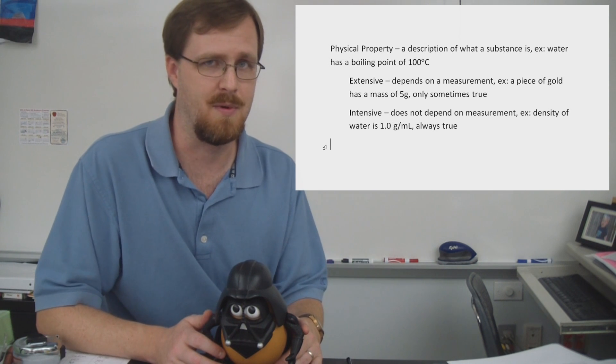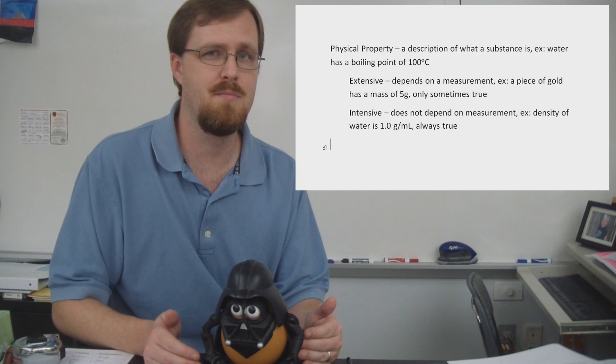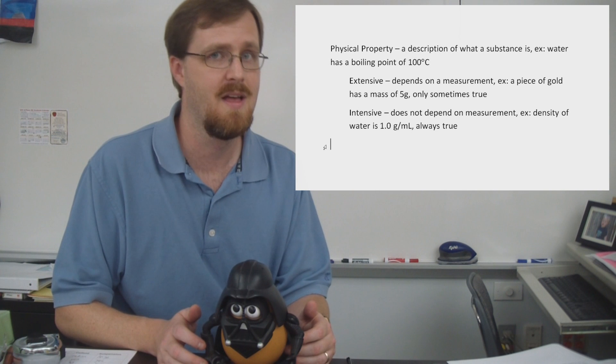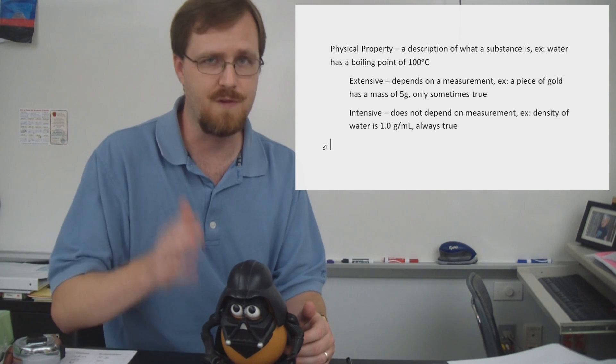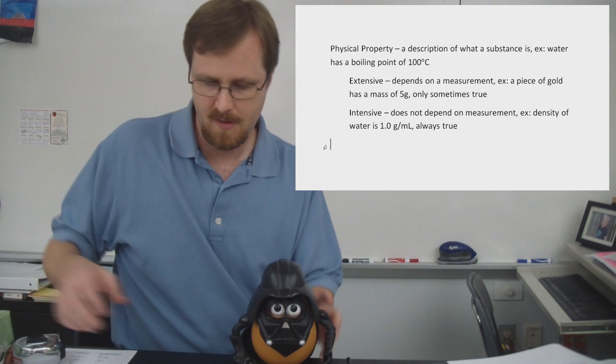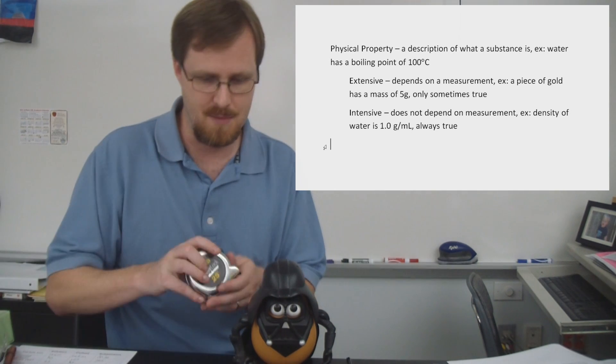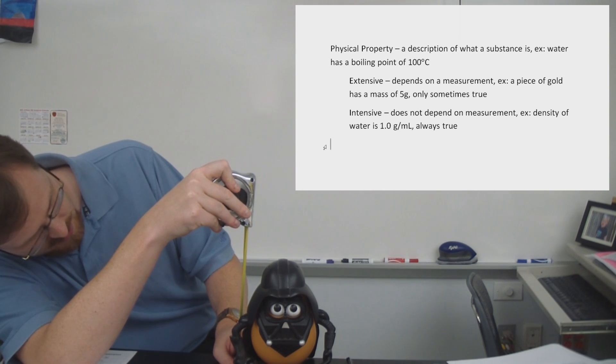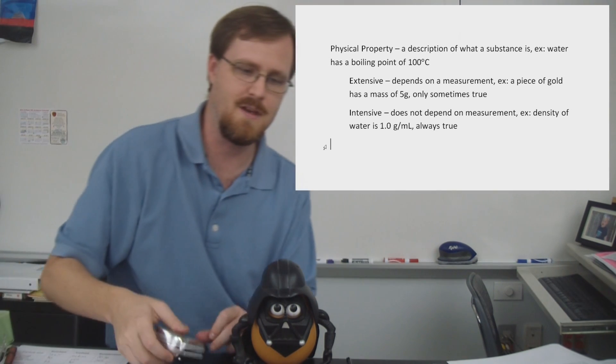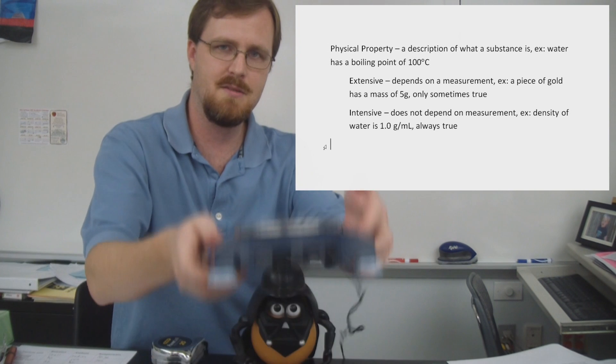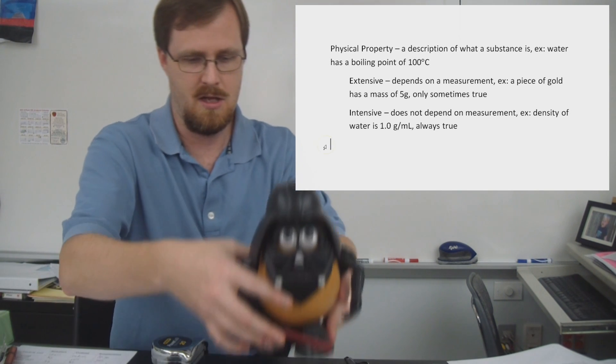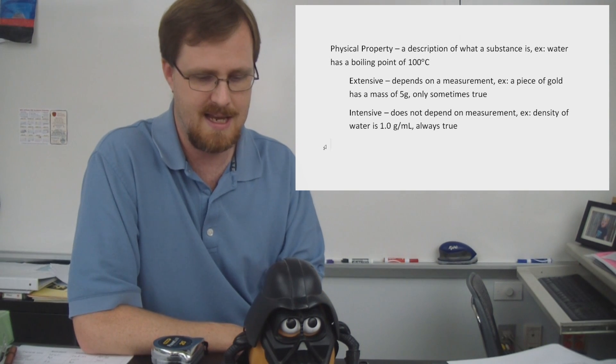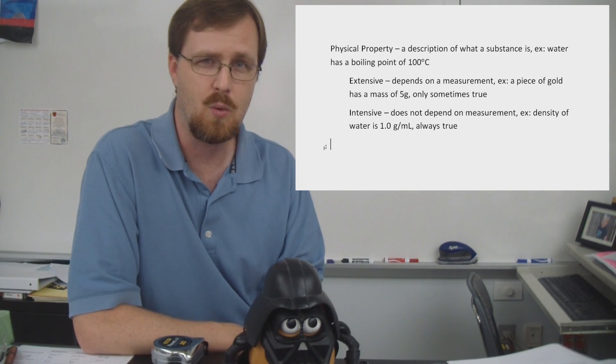An extensive property is one that is based on measurement, meaning that depending on the kind of sample I have, that is actually going to change from sample to sample. For example, I can grab my little tape measure here and I can see that Darth Tater here is seven and a half inches tall. And if I place him directly on my electronic balance, I can put him on there and see that he is 83.02 grams.